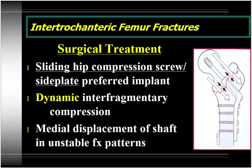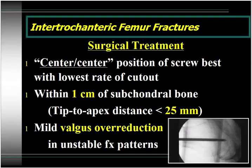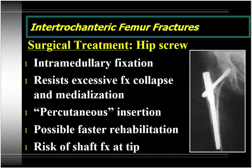The problem with the sliding hip screw technique is that in unstable fracture patterns, as the hip screw slides within the barrel of the side plate, you can get medial displacement of the shaft. Remember that the center-center position for the proximal lag screw is best — center on the AP image, center on the lateral image — associated with the lowest rate of cutout. Remember the importance of tip-to-apex distance: place the tip of your screw within one centimeter of the subchondral bone on both AP and lateral. If your tip-to-apex distance is less than 25 millimeters, the risk of cutout has been shown to be virtually zero. You can consider a mild valgus over-reduction for unstable fracture patterns to prevent medial displacement.